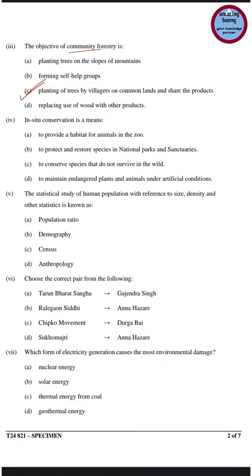The next question: in-situ conservation is a means to protect and restore species in national parks and sanctuaries. In-situ conservation means conservation of wildlife in its natural surroundings or natural habitat. It ensures protection of the ecosystem of the original habitat and includes protected areas like national parks, wildlife sanctuaries, and biosphere reserves.